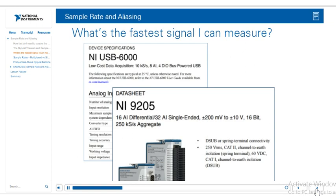For example, the USB 6000 can sample at a maximum rate of 10,000 samples per second, and the 9205 can sample at 250,000 samples per second. This means that the USB 6000 can accurately measure a signal that has a frequency of five kilohertz.